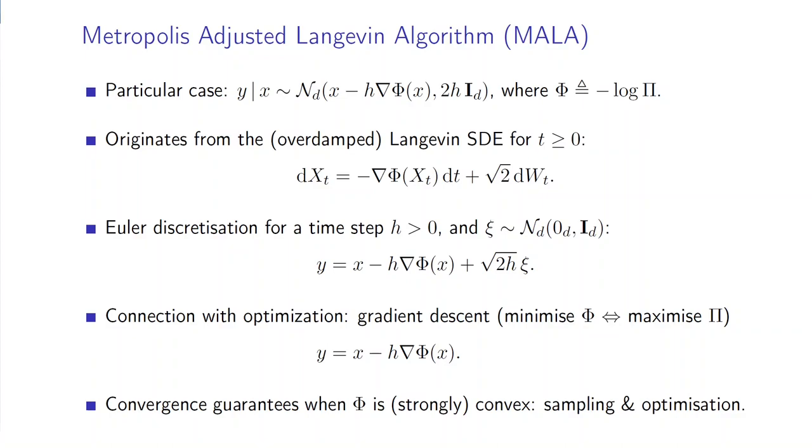In this framework, the purpose of the accept-reject test is to adjust the long-term numerical error induced by discretizing the overdamped Langevin diffusion. This discretization is often used to make a connection with optimization, and in particular, the gradient descent update, which is obtained by removing the Gaussian noise from the equation.